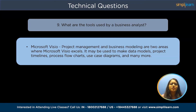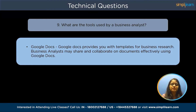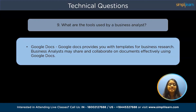Next is Microsoft Visio. Project management and business modeling are two areas where Microsoft Visio excels. It may be used to make data models, project timelines, process flowcharts, use case diagrams, and many more. Next comes Google Docs. Google Docs provides templates for business research, and business analysts may share and collaborate on documents effectively. Many business analysts can use Google Docs to communicate with stakeholders about any kind of file or document.